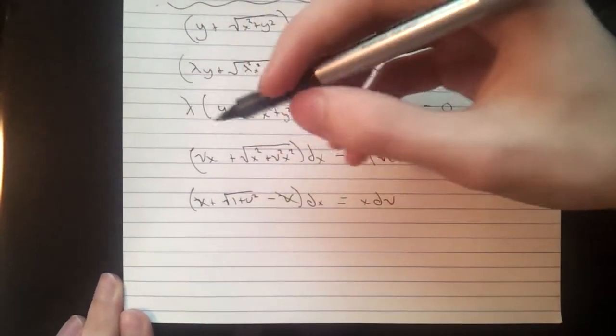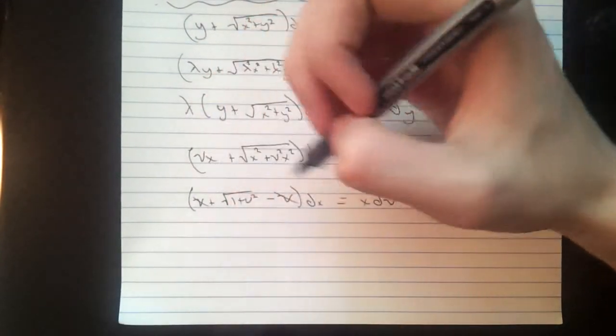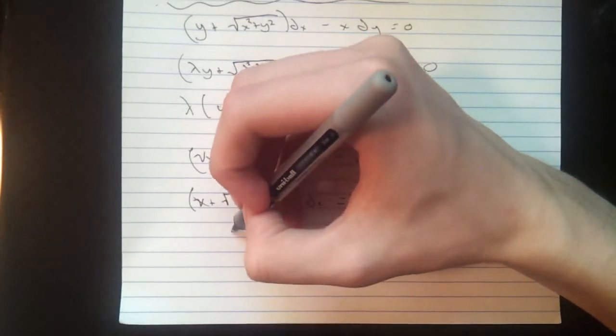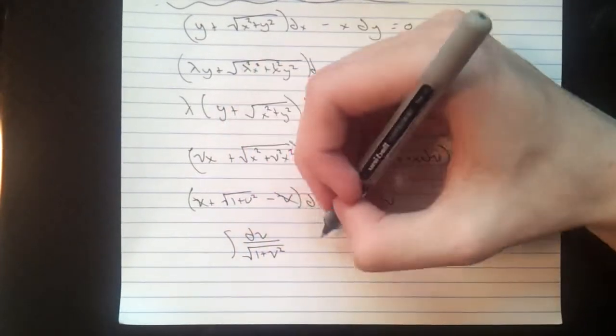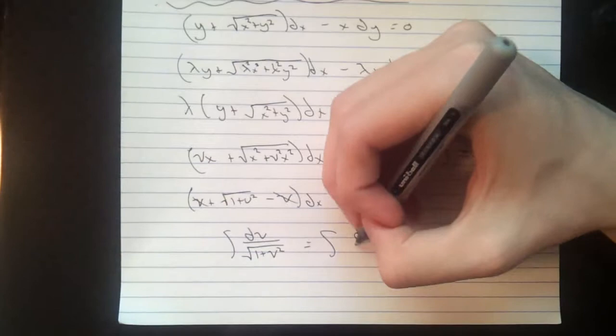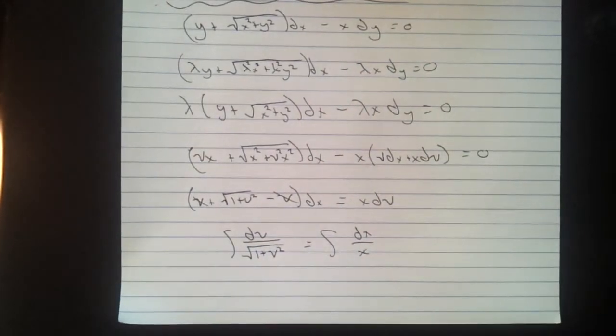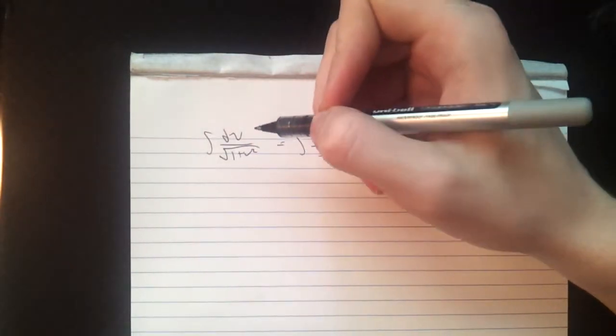Next, we're just going to flip these around so we get them in the right spots, their respective integrands. So we get integral dv over square root of one plus v squared equals integral dx over x. And I'll just write that out again for you. So to integrate this one, we're going to have to do a little bit of v substitution with trig. We're going to set v equals to tan theta dv secant squared theta d theta.